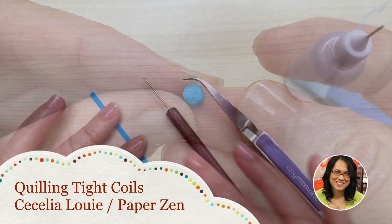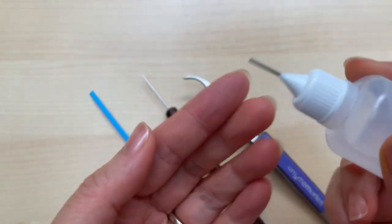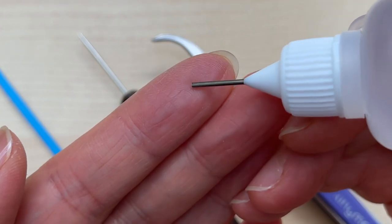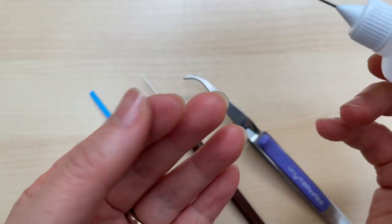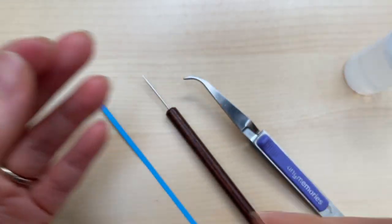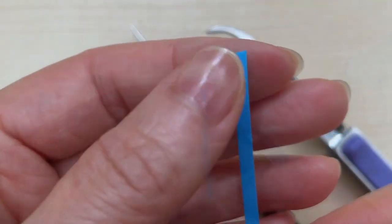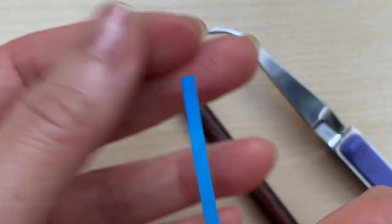Before I start making a tight coil with conventional quilling paper, I'm going to prepare my fingertip using a drop of water and moisten the end of my strip with that excess bit of water.